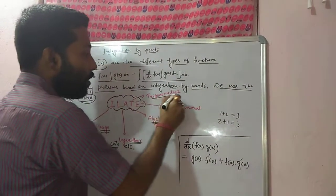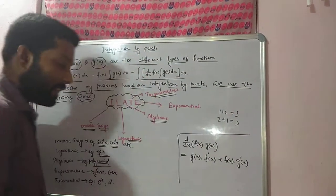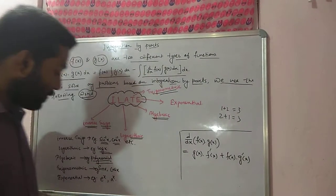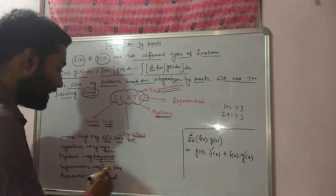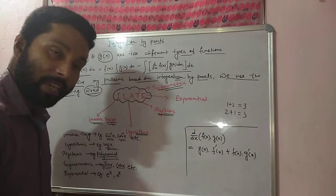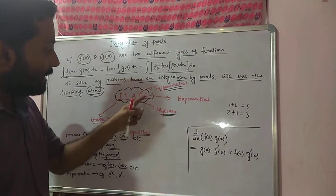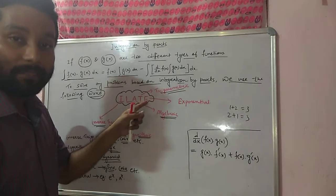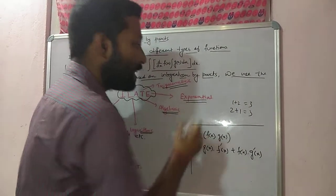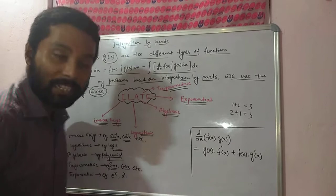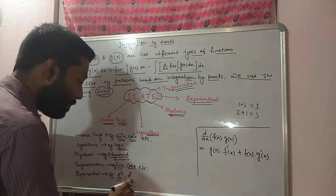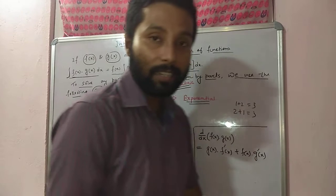T stands for trigonometric function. We all know there are six trigonometric functions in total — for example, sin x, cos x, etc. And the last one, E, stands for exponential function — for example, e^x, a^x, etc.